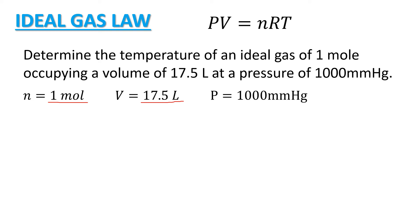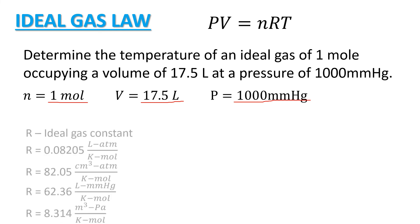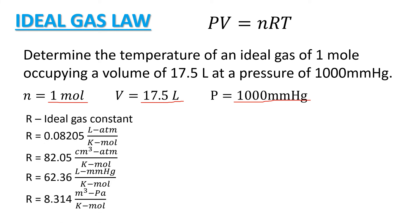In solving our temperature, we must first identify which among the ideal gas constant should we use. Take note that we are using moles, liters for our volume, and the pressure is in terms of mmHg. So, by looking at the units of our ideal gas constant, the R which is equivalent to 62.36 with the unit of liter mmHg over mole Kelvin will be the appropriate R to use to our solution in solving for the temperature of the ideal gas.